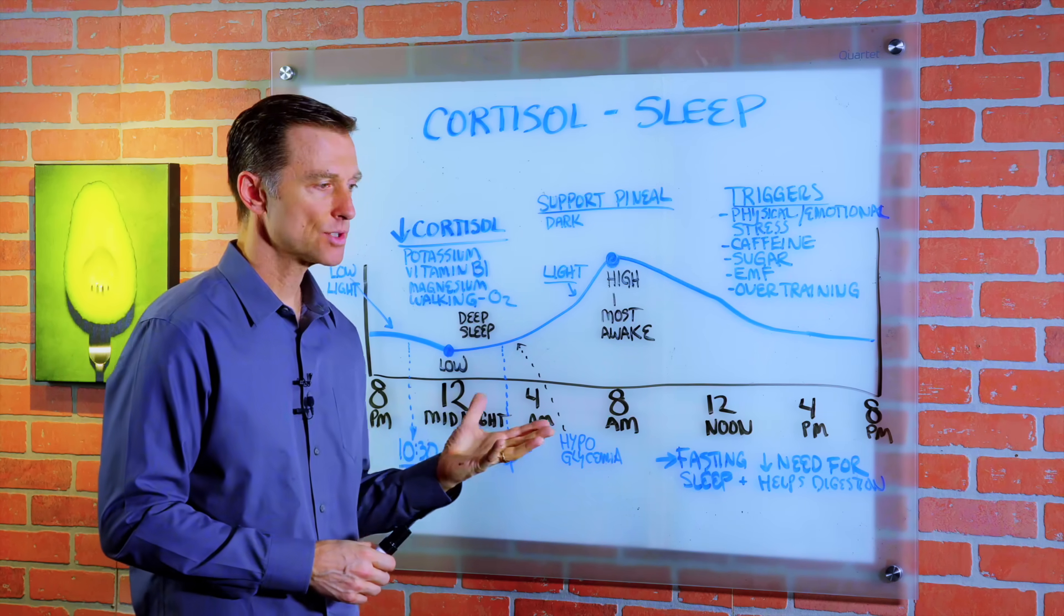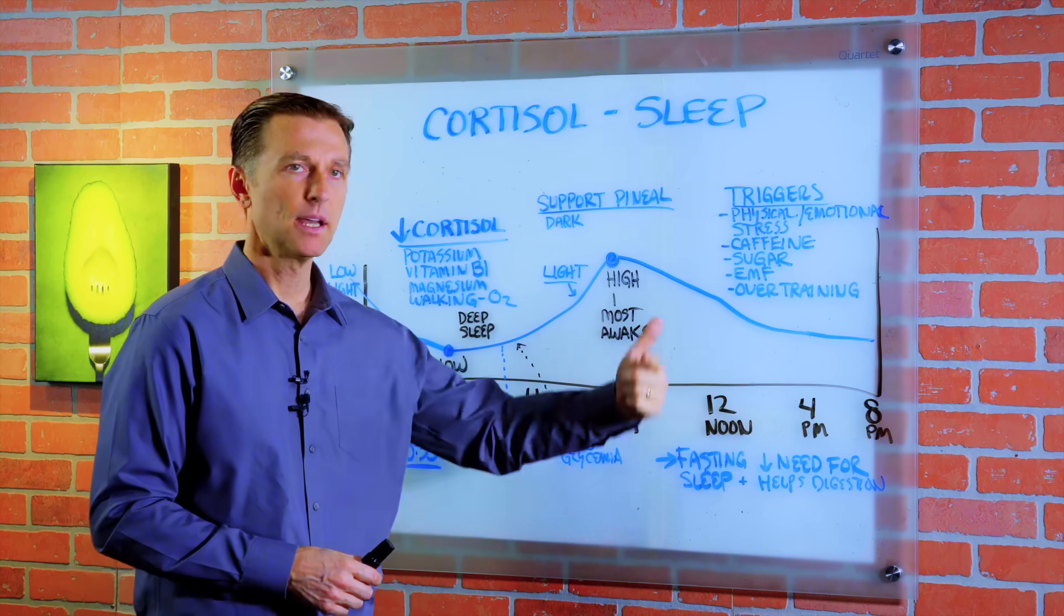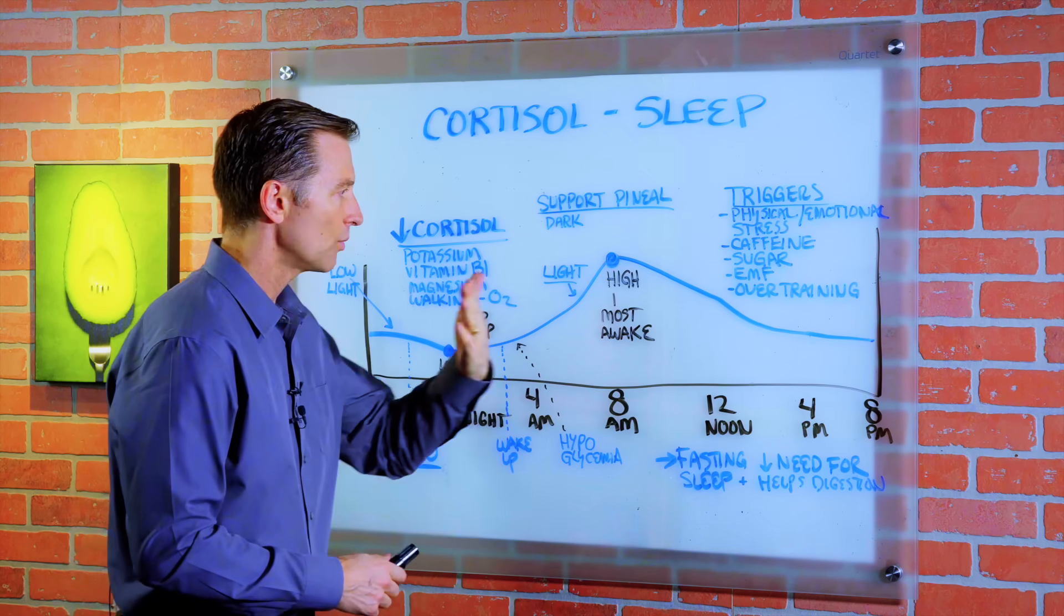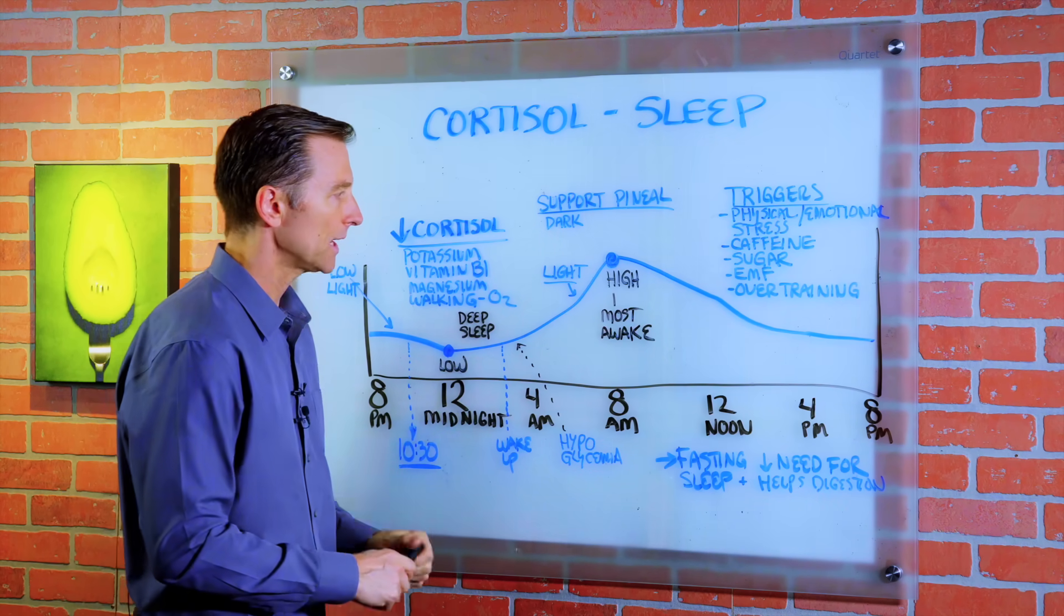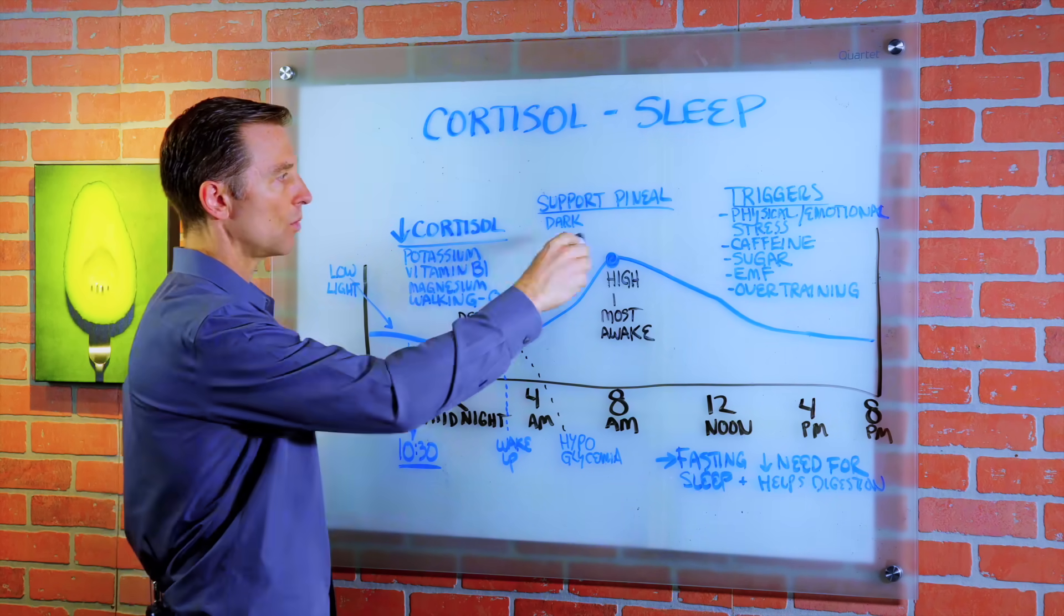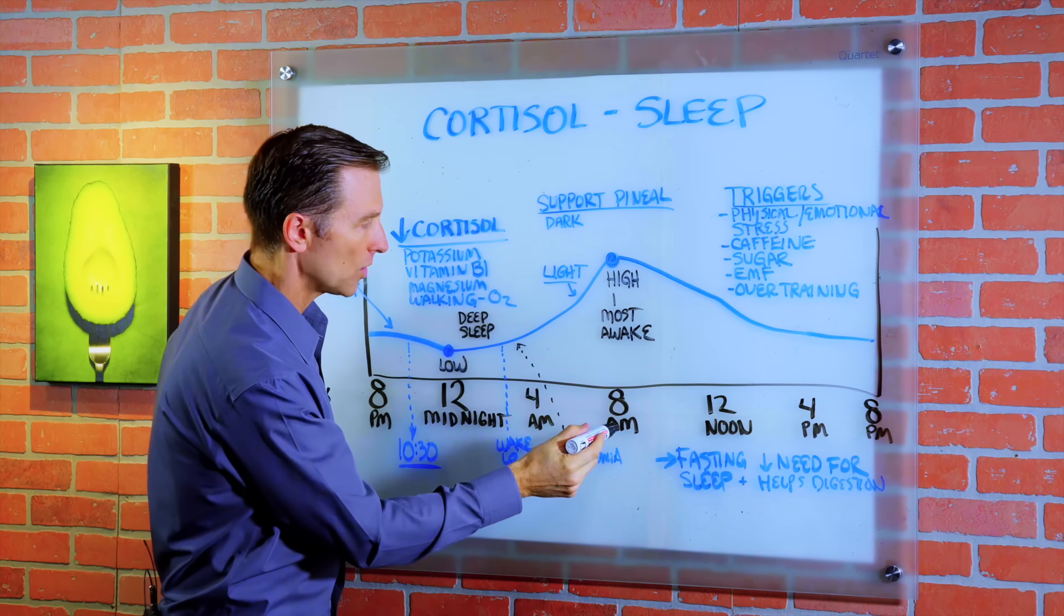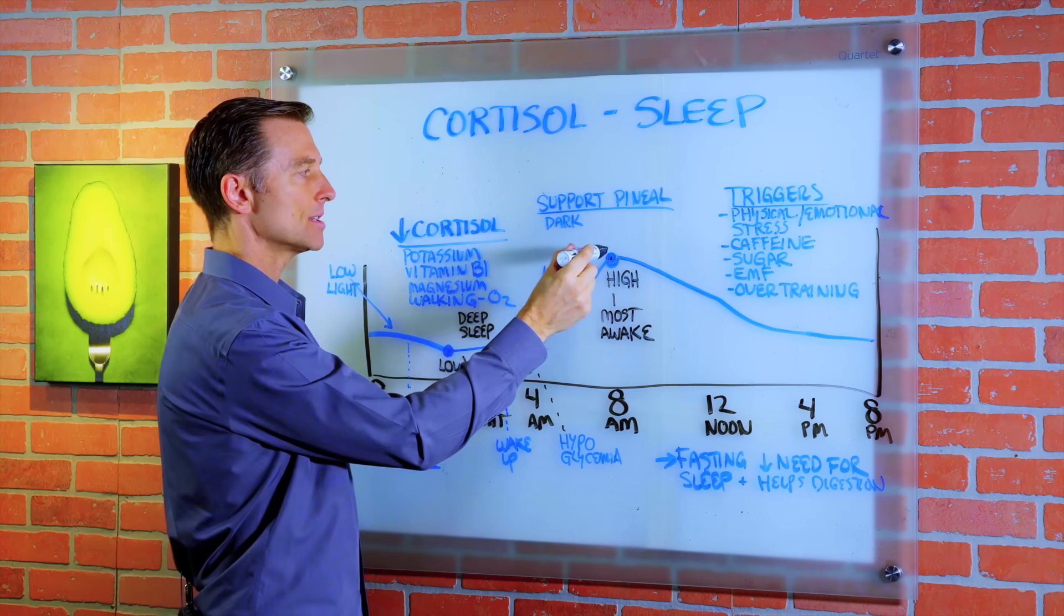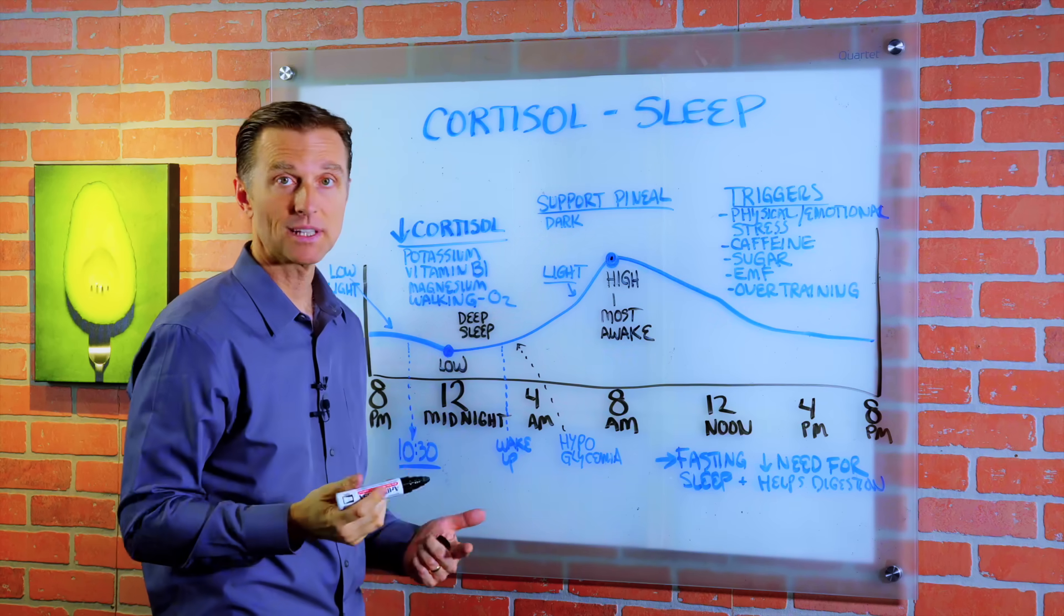Now, cortisol actually is on a circadian rhythm. So you have these waves of hormones. If we take a look at this, this is the cortisol wave. Eight in the morning is when you have the highest cortisol levels, supposedly in theory.